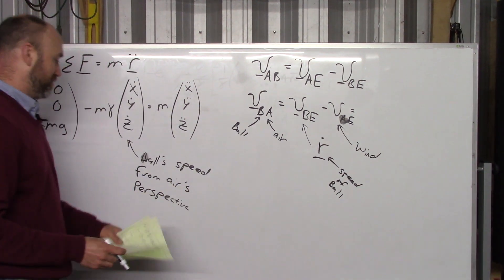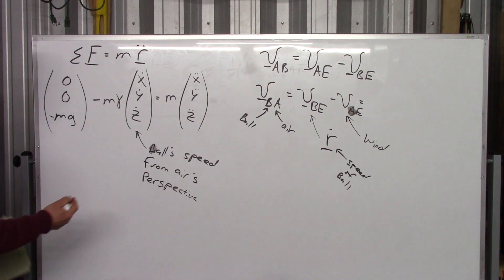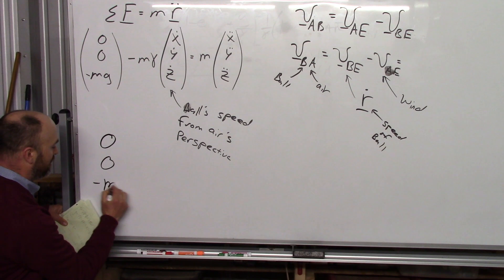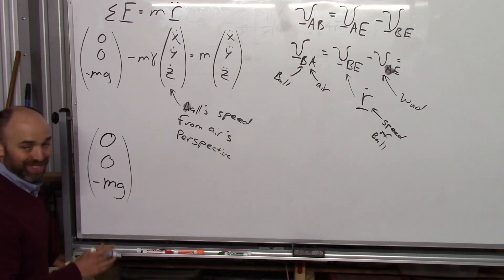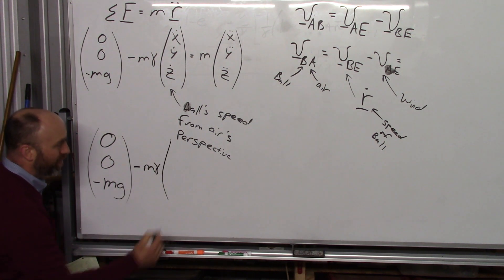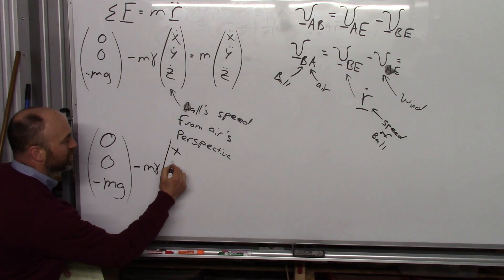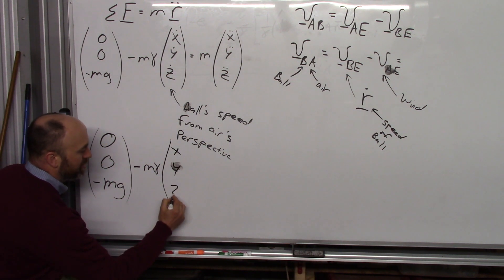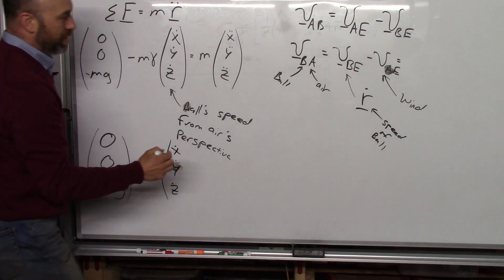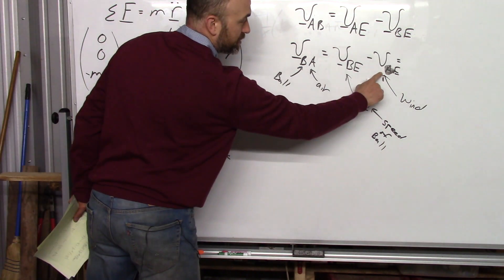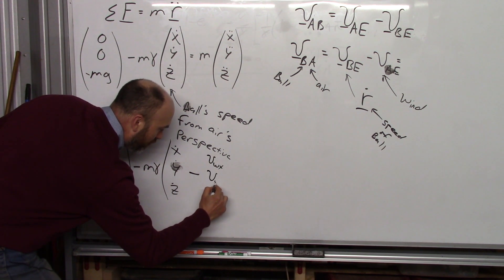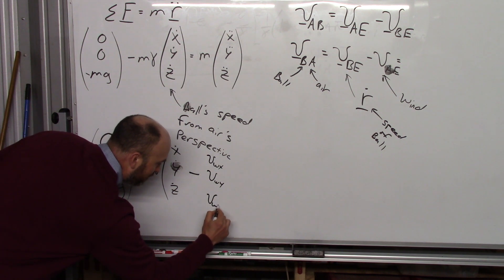So, how is that going to change this equation? Well, it's going to change it so it looks like this. Some of the forces. We're still going to have zero, zero minus mg. That force doesn't change. Wind doesn't change gravity. Okay? We're still going to have minus mg out front. That's not going to change. We're still going to have ground speed in all three dimensions. But we're going to have to subtract off this piece. Wind. So we're going to have v wind x, v wind y, and v wind z.